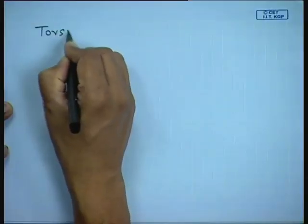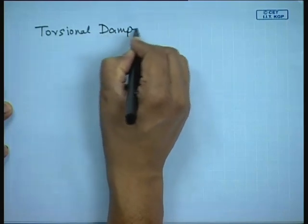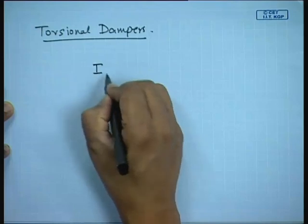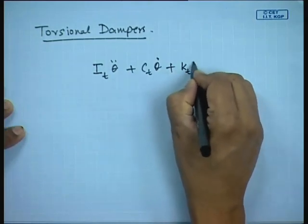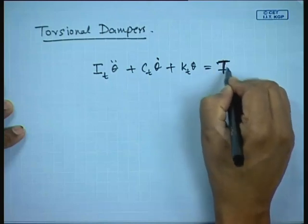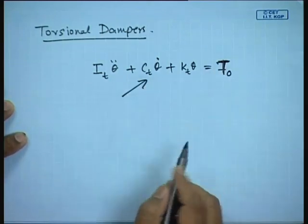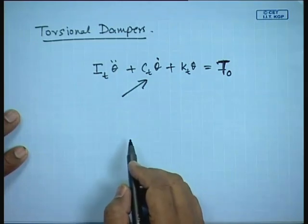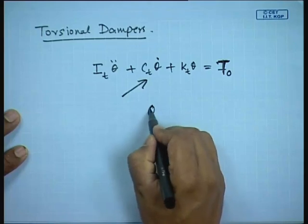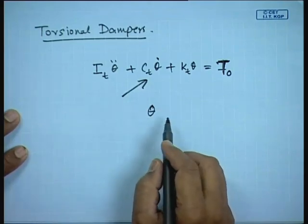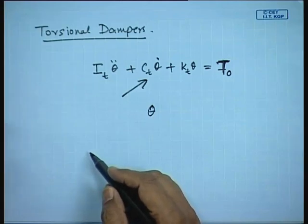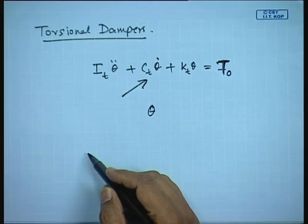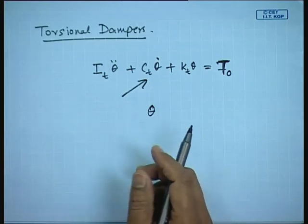Another engineering application is torsional dampers. Recalling the torsional equation I_t·θ̈ + C_t·θ̇ + k_t·θ = T(t), by introducing a damping term through a torsional damper I can reduce the rotational oscillations of the system. For example, the crankshaft of an engine, which undergoes rotary motion, can have its torsional oscillations reduced by a torsional damper. These are some of the applications, and we will now see some practical examples.